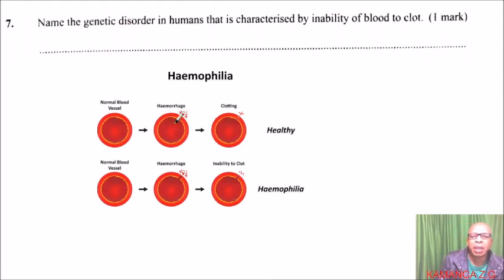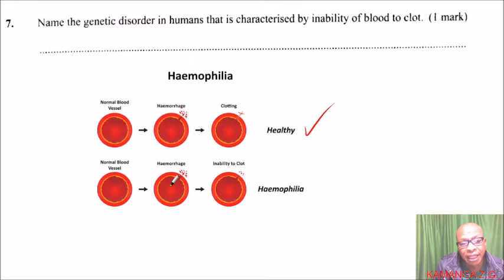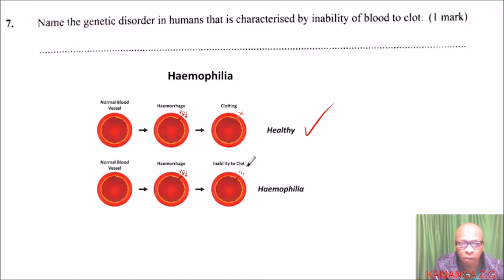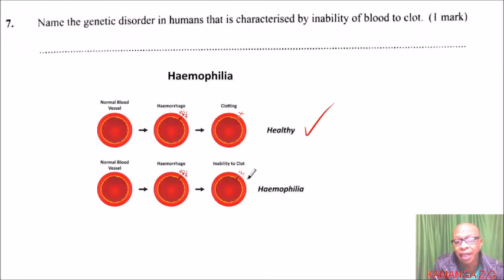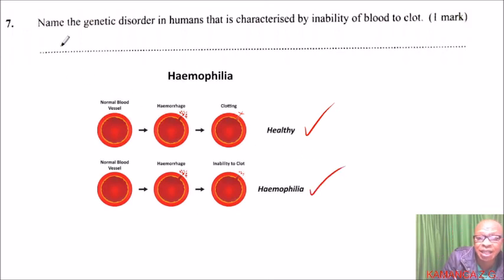So this is a healthy person with a normal blood cell. When it is injured, we say it is hemophage. Due to the inability of blood to clot, the blood will continue coming out, and that condition is what we call hemophilia. So the answer you put here is hemophilia.